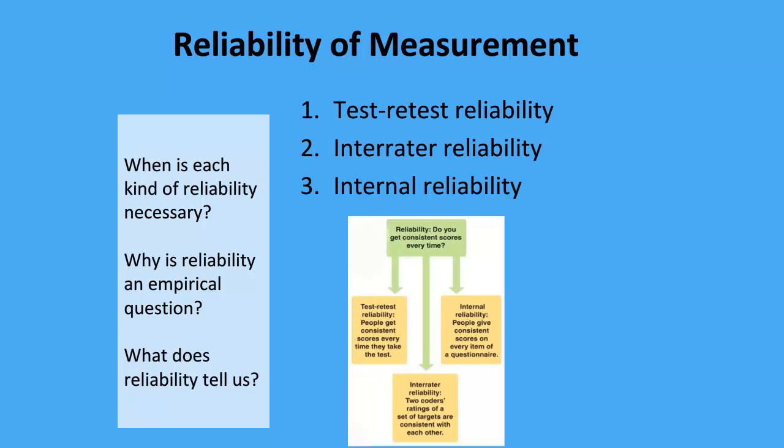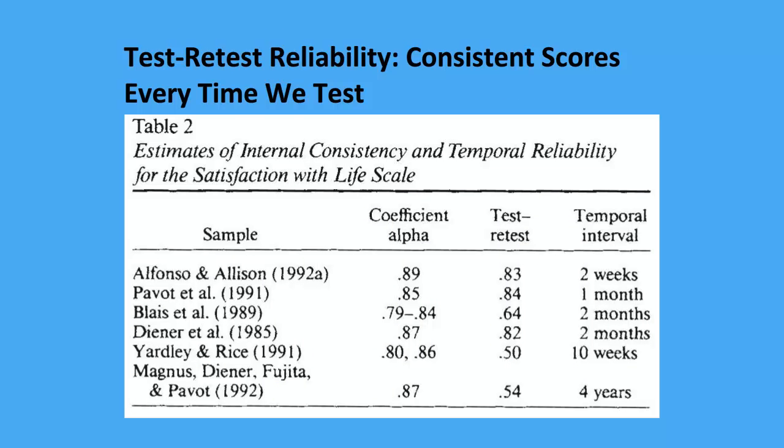Why is reliability an empirical question? We can measure all of this with data. You can run a correlation — which we've touched on and will cover more later — to see how well numbers go together, and get one single number from that. We can also do scatter plots to see visually how well scores fall together. We're using data to answer these questions. And what does reliability tell us? Overall, do you get consistent scores every time? Hopefully in every published article you come across, you'll find reliability information, which should always be reported.